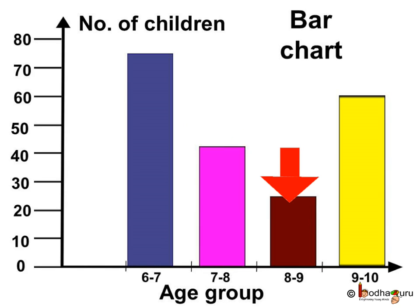The brown bar represents the number of children in the age group 8 to 9, which is equal to 25. And lastly, the yellow bar represents the number of children in the age group 9 to 10, which is equal to 60.